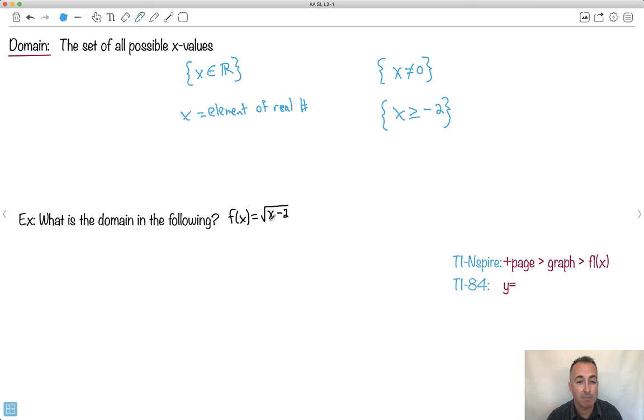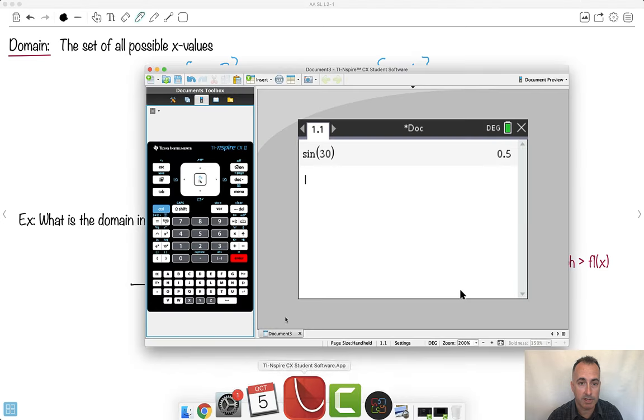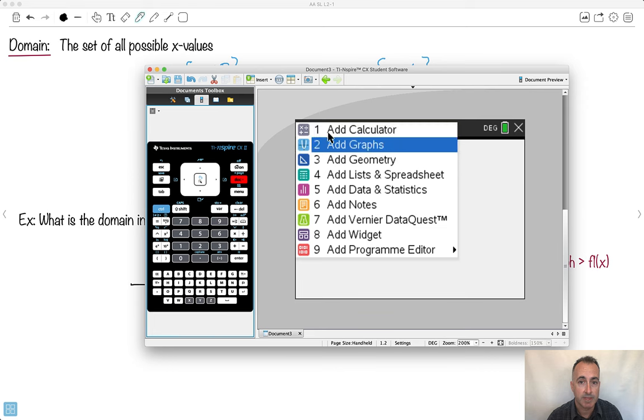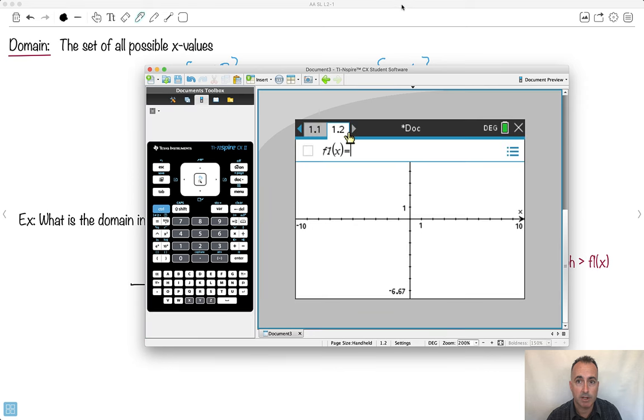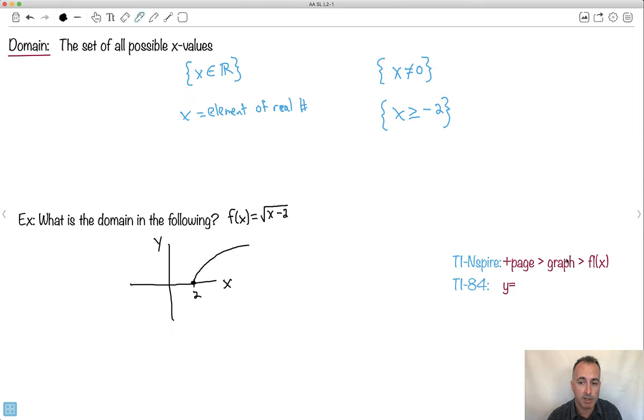And a good trick is to actually graph it, to look at it. So, for example, what's the domain in the following? So let's say I've got this thing called f of x equals square root of x minus 2. Now, if you know about transformations, you could have seen this as a square root of x. I know what graph of square root of x looks like. It looks like this. And if I want x minus 2, that would mean we move it to the right by 2. So I know it's going to go something like this. So here is 2.